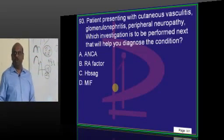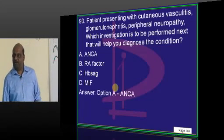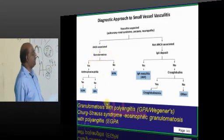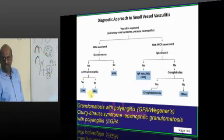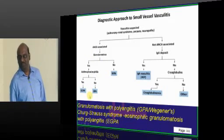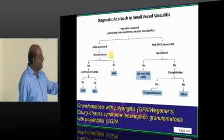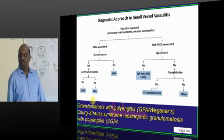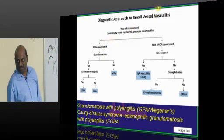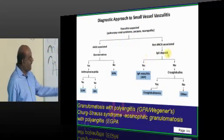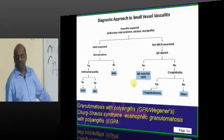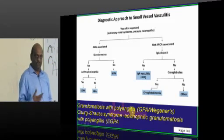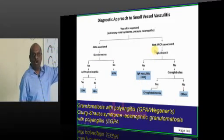Cutaneous vasculitis with glomerulonephritis and peripheral neuropathy is an example of ANCA-associated vasculitis. Vasculitis is divided into ANCA-associated and non-ANCA-associated. Among ANCA-associated granulomatous types: if asthma and eosinophilia are present, it is Churg-Strauss syndrome. Without asthma-eosinophilia but with granuloma and ANCA positivity, it is granulomatosis with polyangiitis (Wegener's). If there is no ANCA, look at IgA — if IgA is deposited, call it IgA vasculitis; otherwise it is Henoch-Schönlein purpura. Look for cryoglobulins — if present, call it cryoglobulinemia.